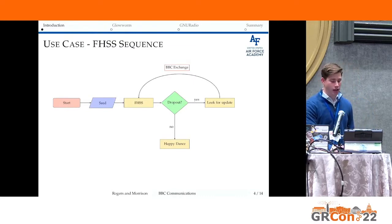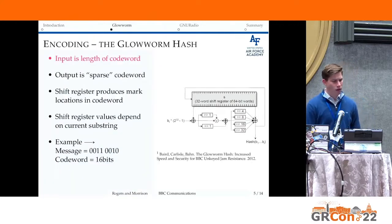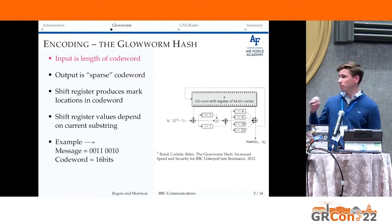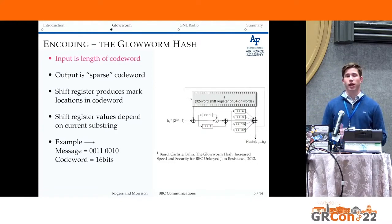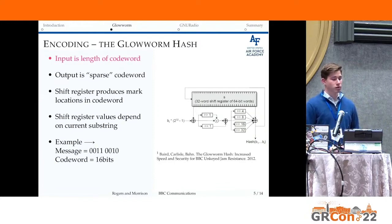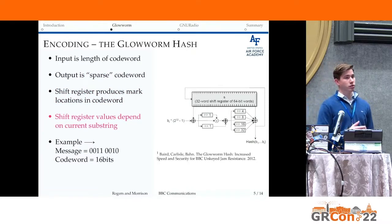There's a flow diagram showing seeding a frequency hop sequence using BBC — we'll get a demo of that at the end. On the encoding side, we're using the glow worm hash. The block diagram shows the hash function with a 32–64 bit word shift register, so the hash itself has memory. This enables a repeatable pseudo-random result for an entire substring of bits rather than a single bit. The encoder takes in the length of the code word and the message to encode, and outputs a sparse code word — mostly zeros up to that 50% mark — with repeatable mark locations. The shift register returns an index location within the code word.